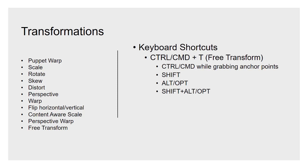Alt or Option works similarly to how it does with the marquee tools — it will scale, rotate, or transform your object from the center rather than from the point you're grabbing. If you hold Shift and Alt or Option at the same time while dragging on anchor points, it locks the aspect ratio and moves from the center. That combination is very useful across all kinds of tools.